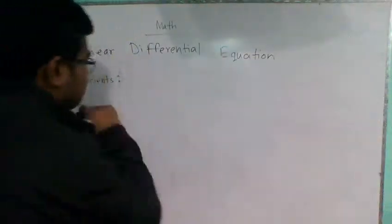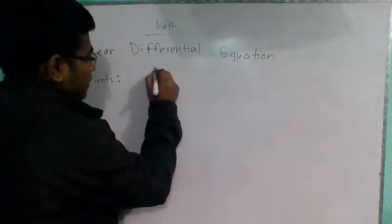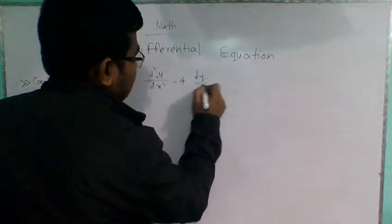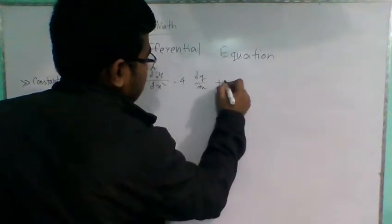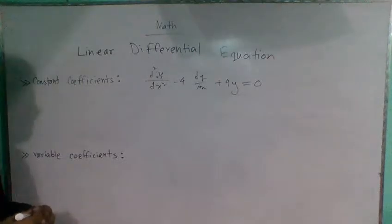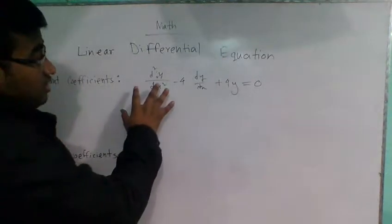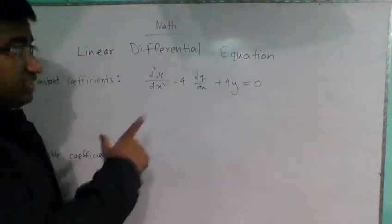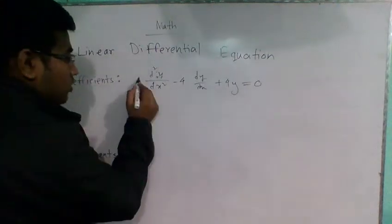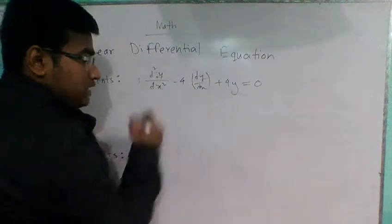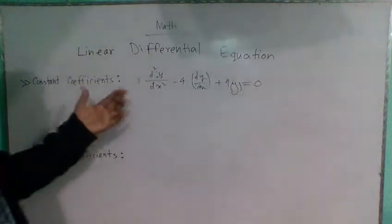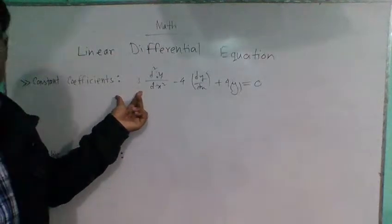For example, if we have d squared y by dx squared, minus 4 dy by dx plus 4y equal 0. So here we have a linear differential equation — a second order linear differential equation. Here the second derivative coefficient is 1, the first derivative coefficient is minus 4, and y coefficient is also constant. So here we have constant coefficients.